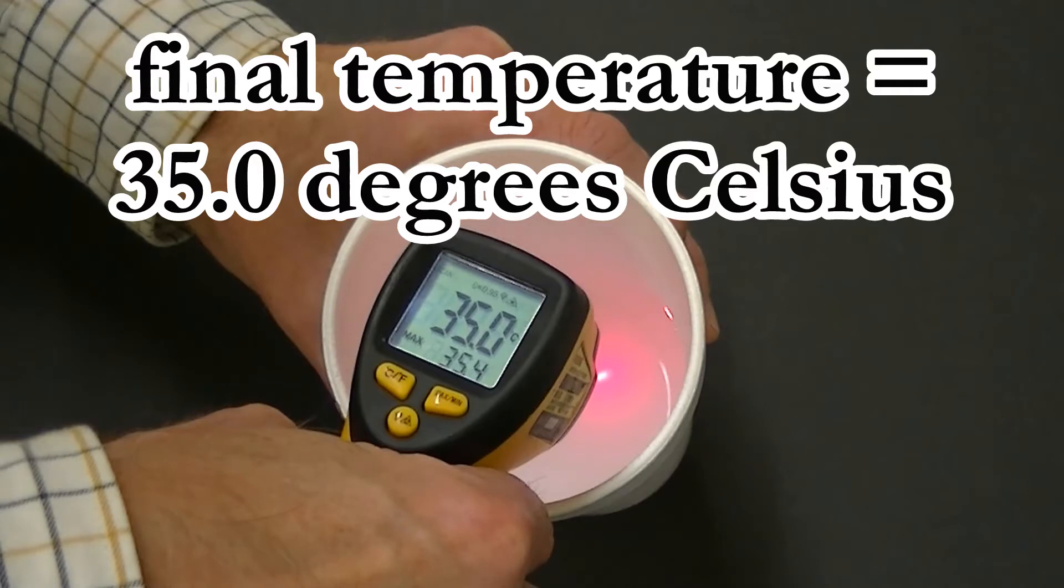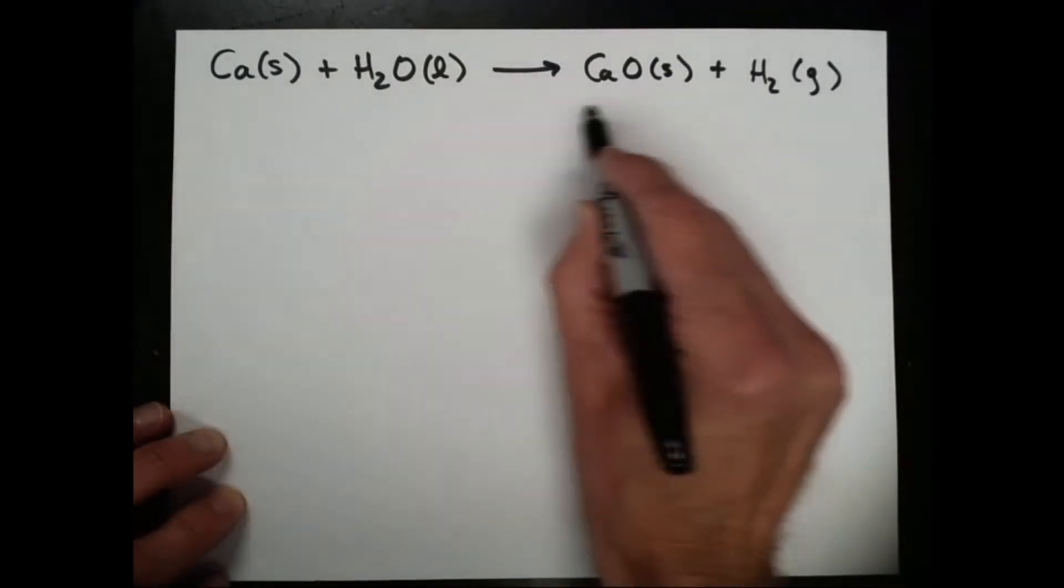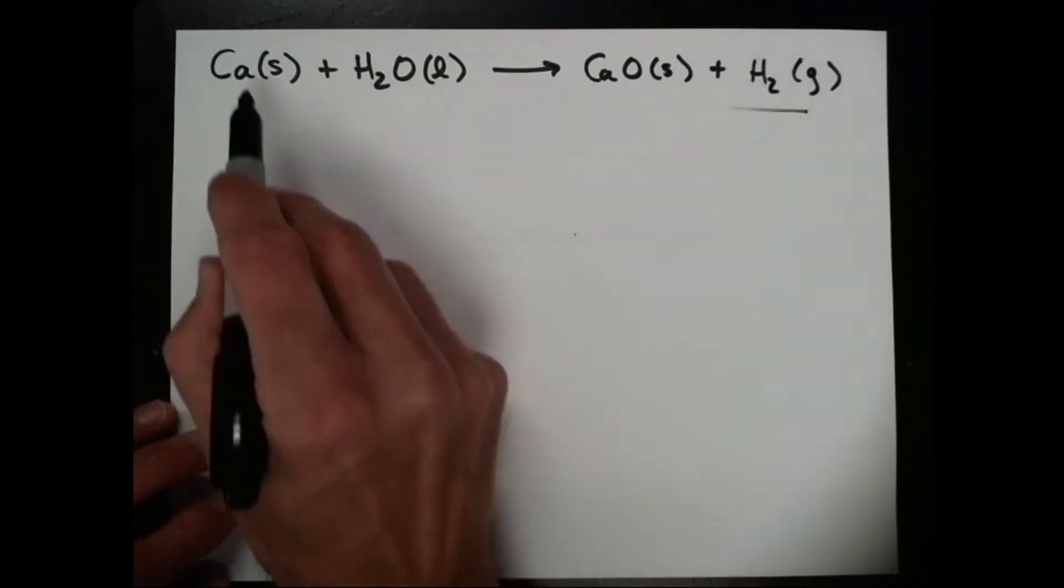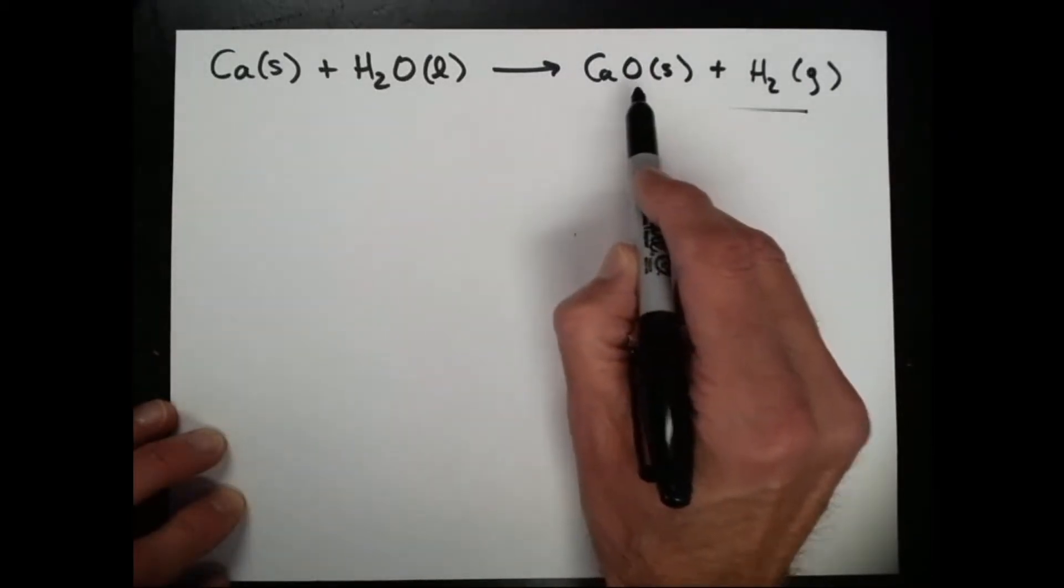We now have enough information to quantitatively analyze our results. Let's now analyze our results. This chemical equation represents the reaction that we just saw between calcium solid and water forming calcium oxide and hydrogen gas.